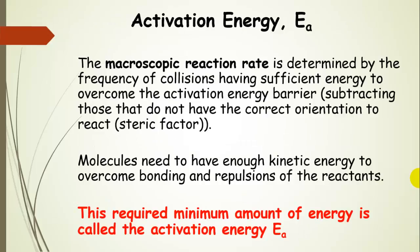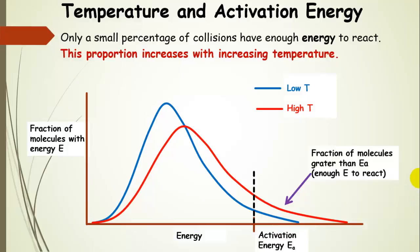The macroscopic reaction rate is determined by the frequency of collisions having enough energy to overcome the activation energy barrier, minus those that don't have the correct orientation. Molecules need enough kinetic energy to overcome bonding and repulsion of the reactants — this minimum amount of energy is called the activation energy. At any temperature, only a small percentage of collisions have enough energy to react, with a smaller fraction at low temperatures and a larger fraction at higher temperatures.